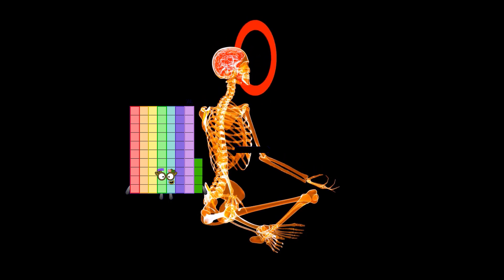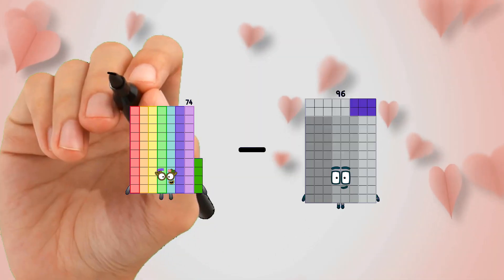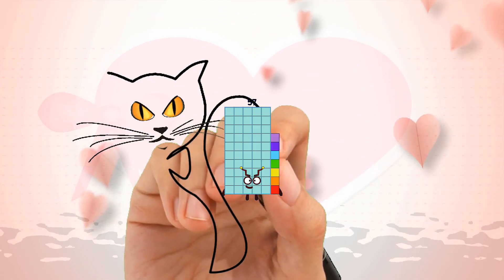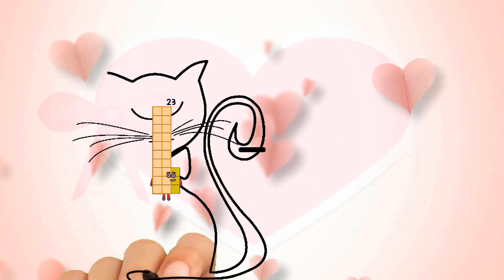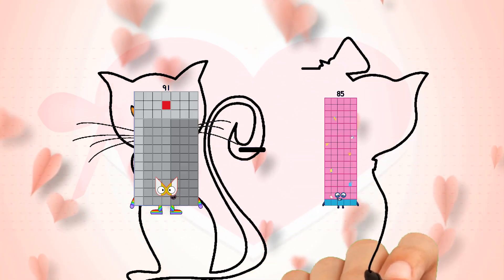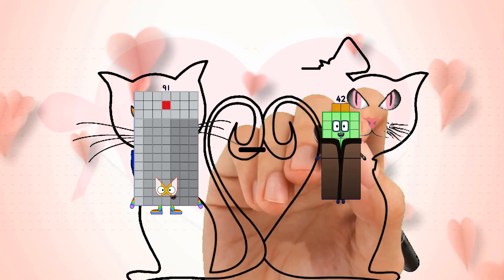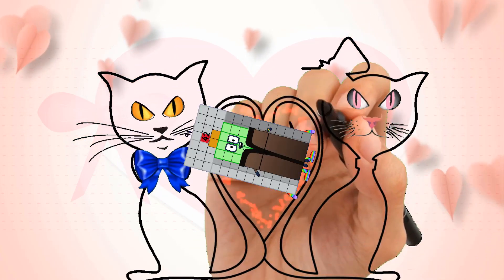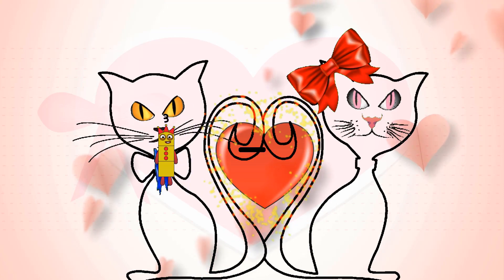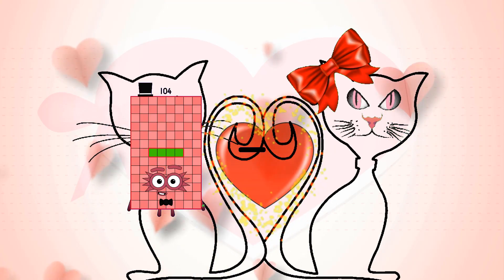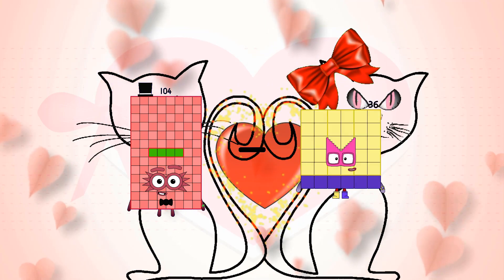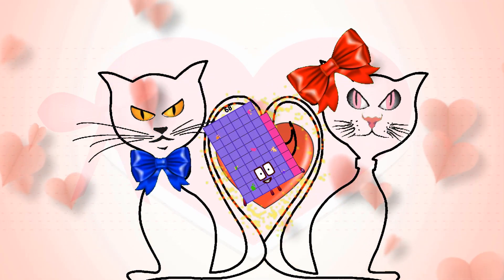Seventy-four minus seventy-four minus seventeen equals fifty-seven. Ninety-one minus forty-two equals forty-nine. Sixty-nine minus thirty-nine equals forty-nine.